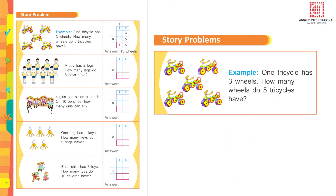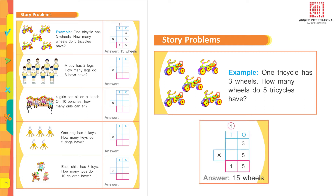Story problem: One tricycle has three wheels. How many wheels do five tricycles have? You have five tricycles and three wheels in each. Form the sum like this: 3 multiplied by 5. Now count the five times table — five ones are 5, five twos are 10, five threes are 15.